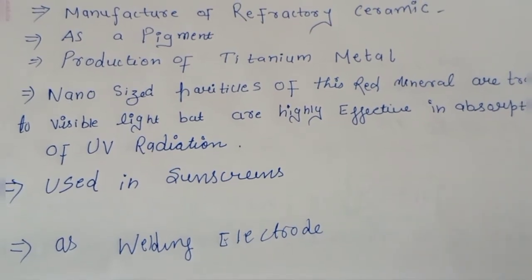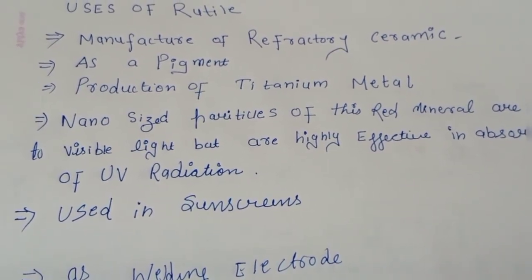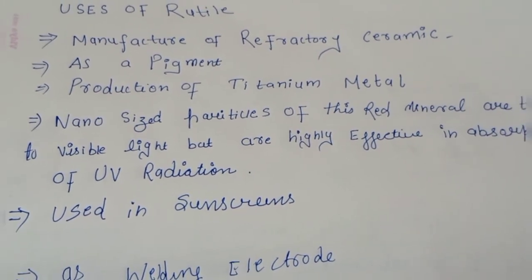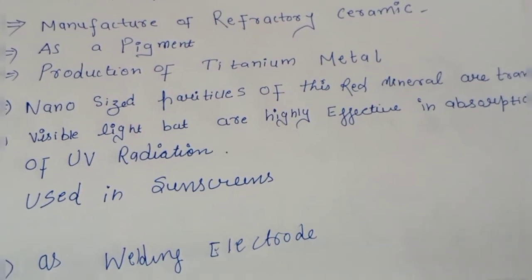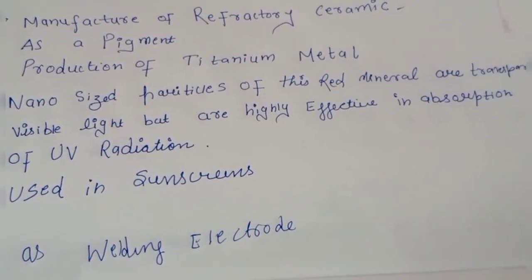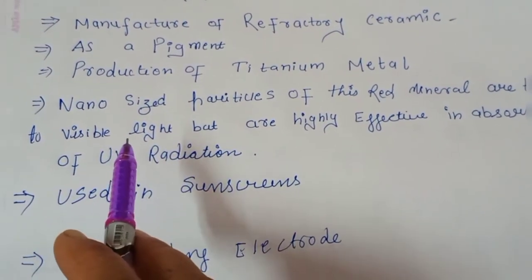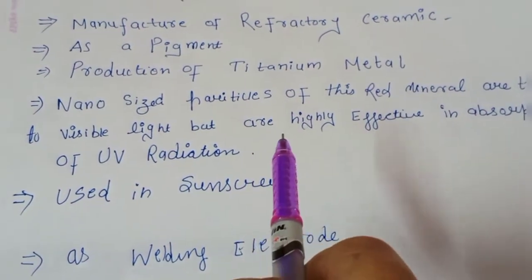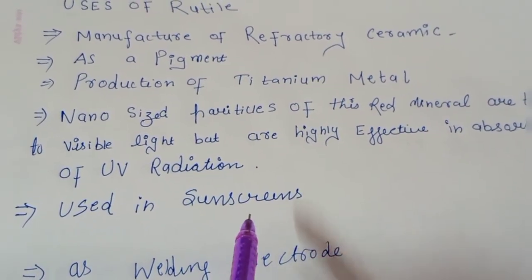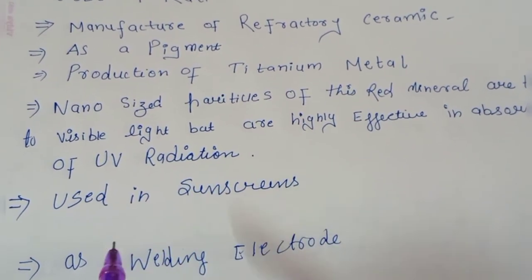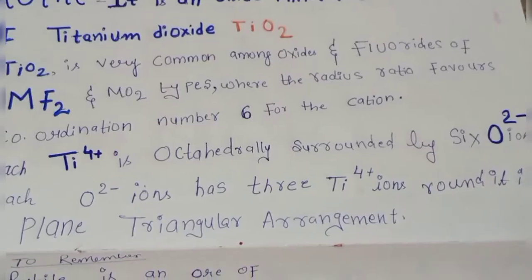Rutile is used for manufacturing refractory ceramics. TiO₂ is vastly used as a white pigment — white paint uses a large amount of titanium dioxide. It is a main source for the production of titanium metal. Nano-sized particles of rutile are transparent to visible light and can be used in making jewelry, but they are also highly effective at absorbing UV radiation, making them useful in manufacturing sunscreens. Rutile is also used as welding electrodes.